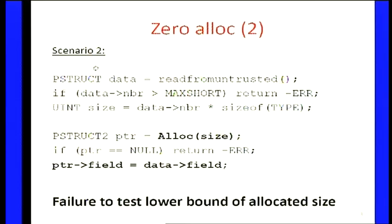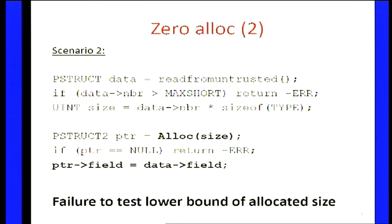In the second example, you have an arithmetic operation such as multiplication or addition, and the result can still be zero. Say data->NBR is zero: multiplication gives zero, so the size stays zero. You allocate zero, you test for a null pointer again, but no error is reported.